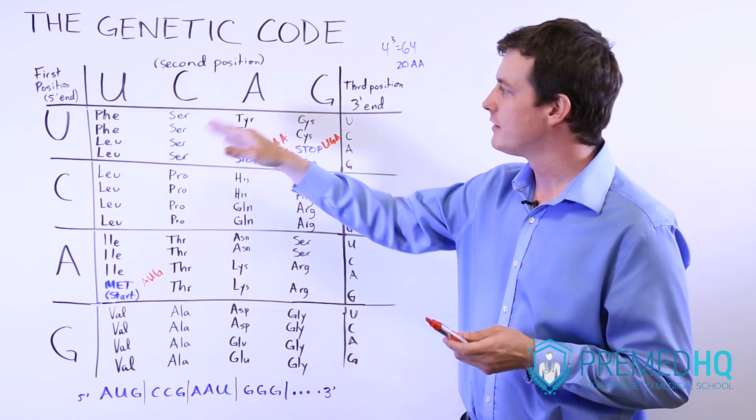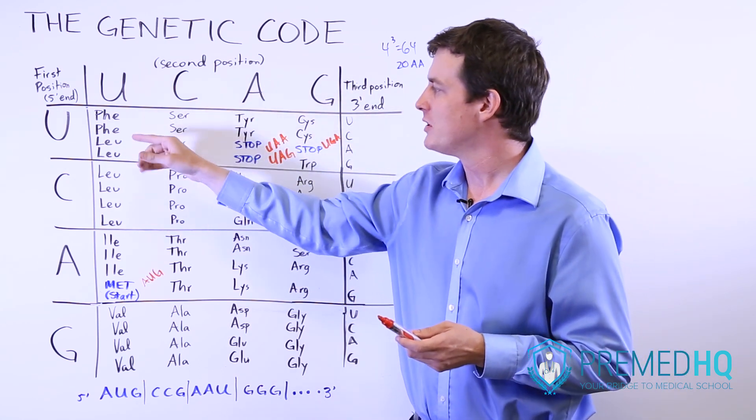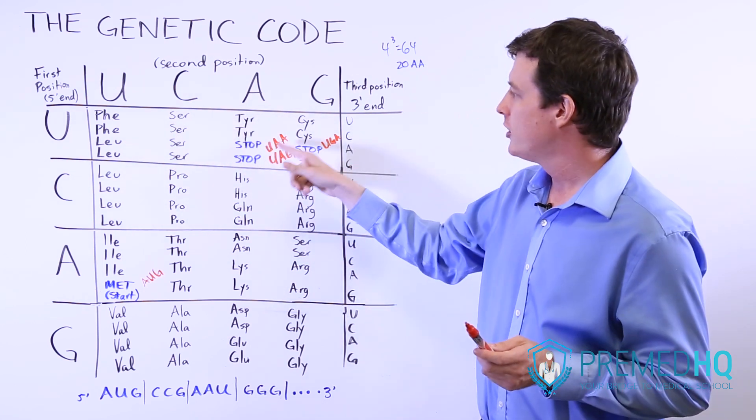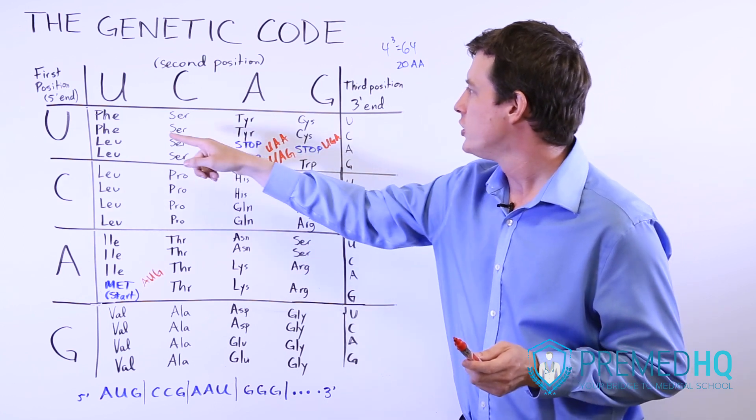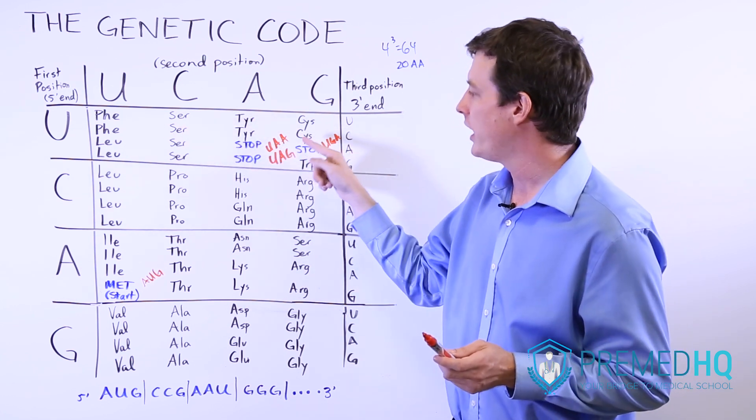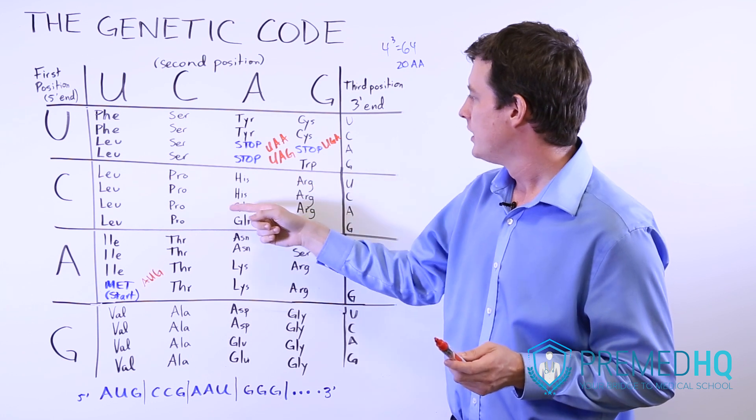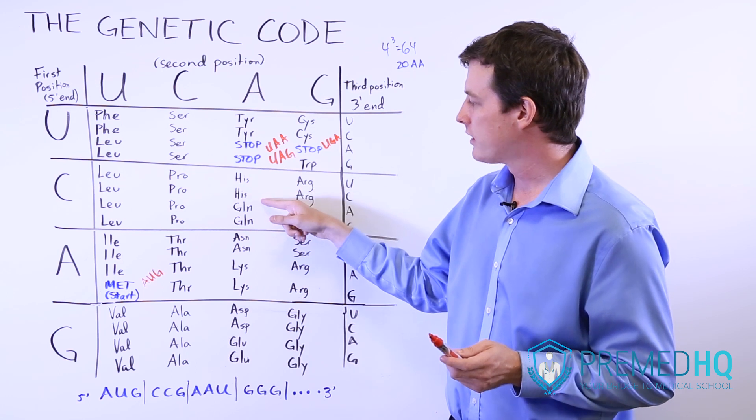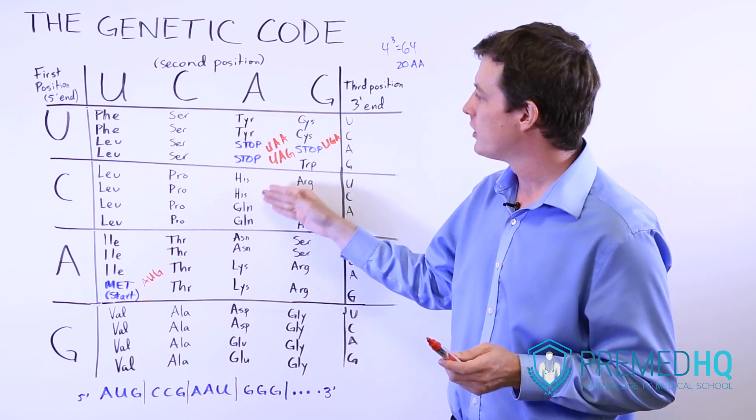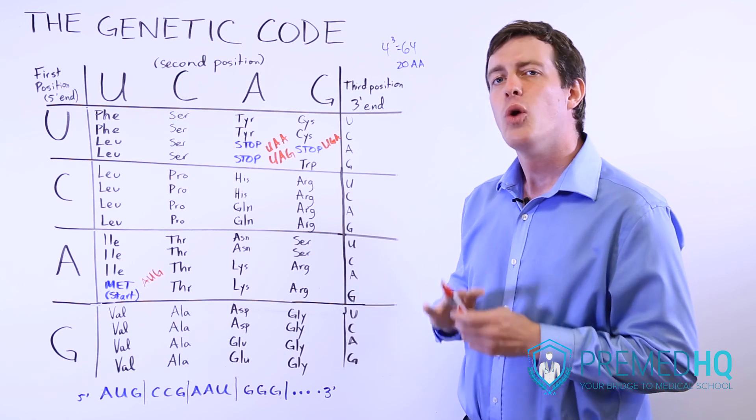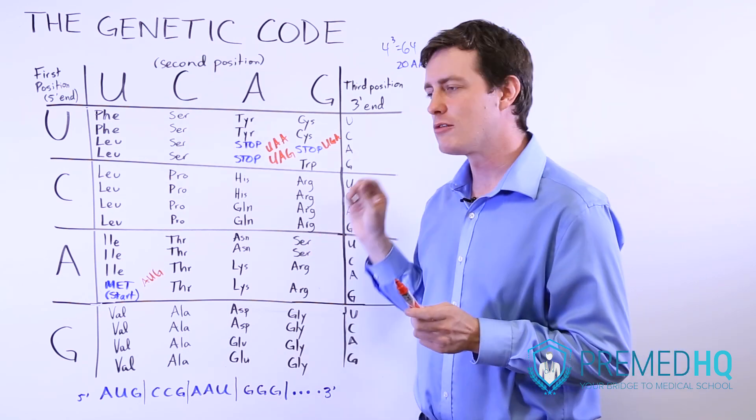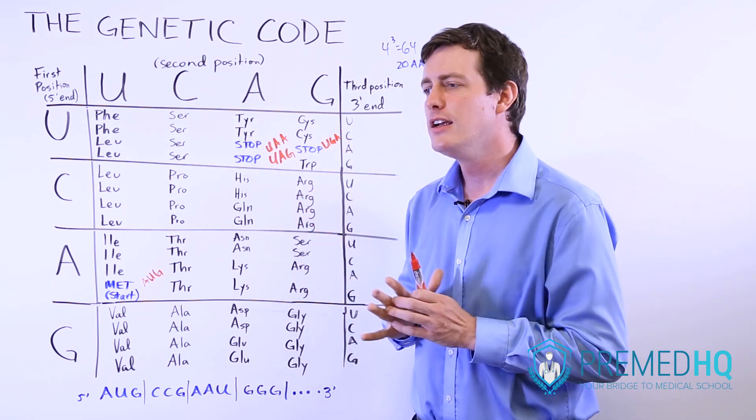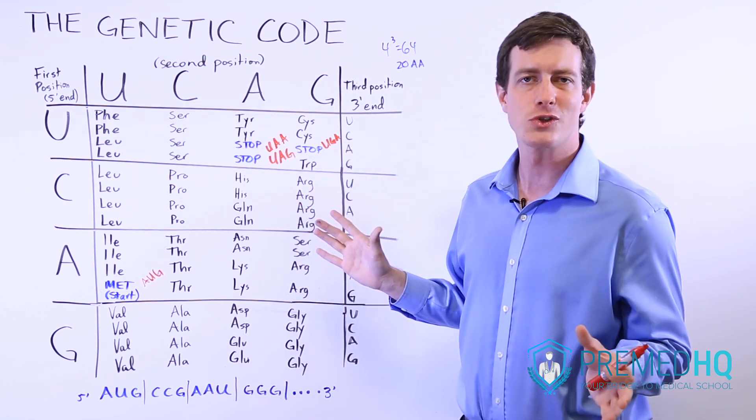Now, I've used a lot of situations where our point mutation has been in the third codon position, but it can be anywhere. It could be that we go instead of from a UAC to a UAA, we could go from something like a CAA, which is glycine, and replace that C with a uracil and turn it into UAA, which is a premature stop codon. Whenever there is a point mutation that results in a premature stop codon, that is called a nonsense mutation.